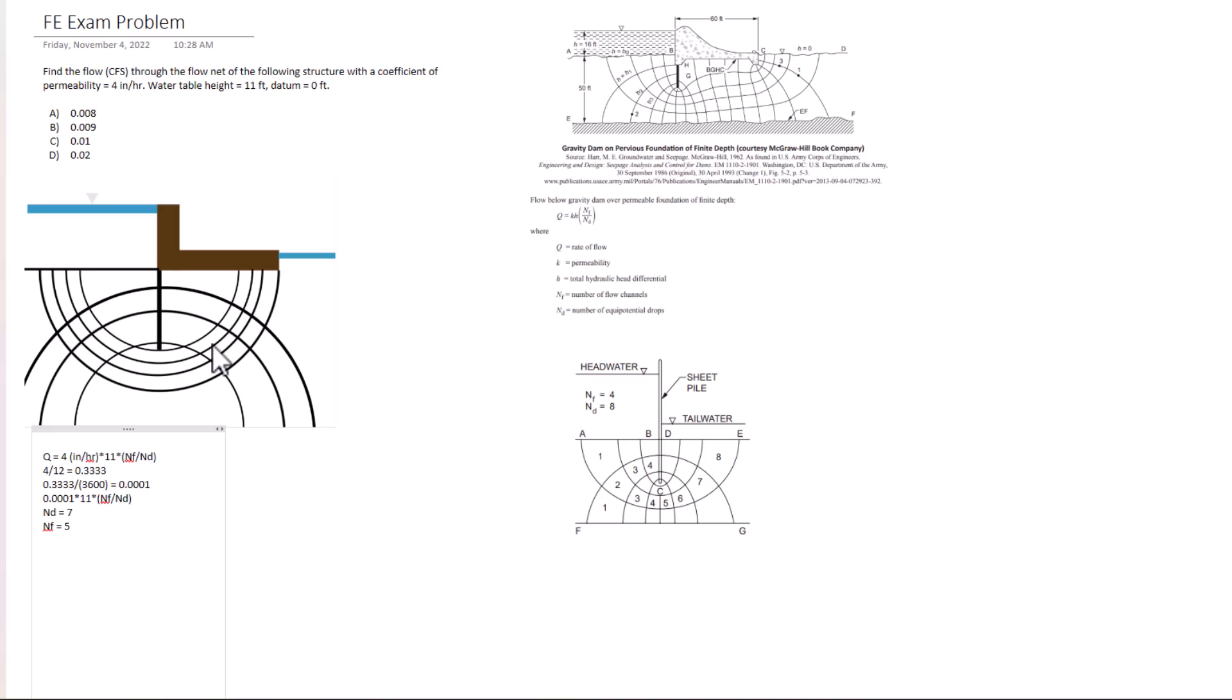So we have this equation set up: 0.0001 times 11 times the ratio of five divided by seven. All of our units are correct. That gives us the final answer of 0.0008.